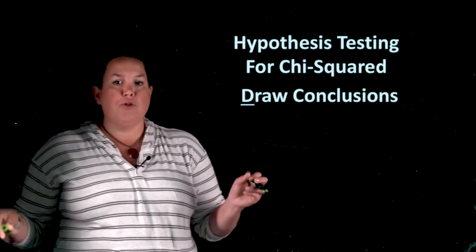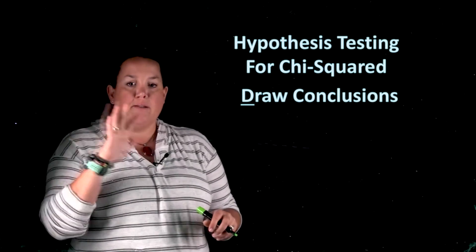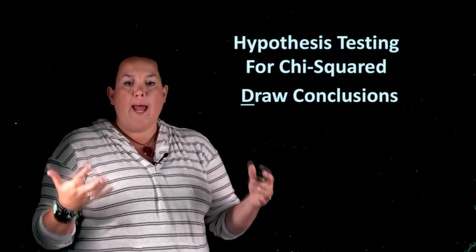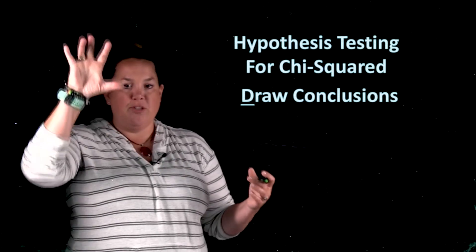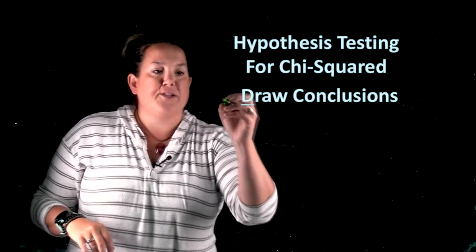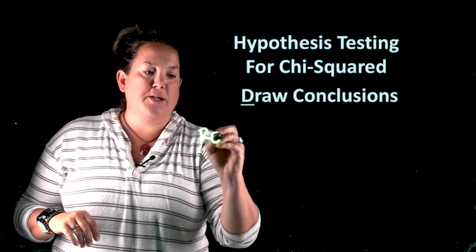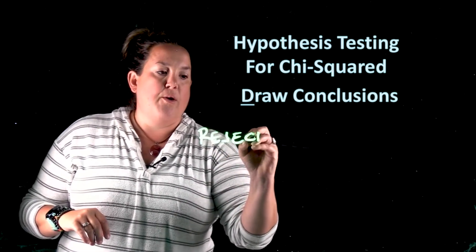Now before we get into drawing conclusions, I just want to really quickly recap the reject and fail to reject the null and how you got there, and then we'll ultimately get to drawing conclusions because all of this is building. So we had the option of rejecting the null.